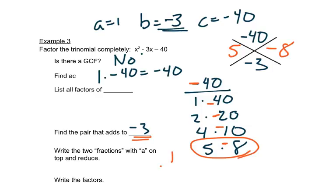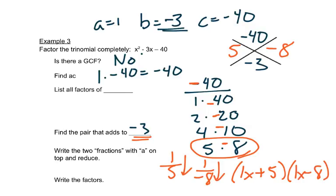So I write my fractions, 1 over 5 and 1 over 8. Neither can be reduced. So I'd have 1x plus 5 reading straight down, and 1x minus 8 reading straight down. And again we normally don't write those ones in there. We usually just write x plus 5 and x minus 8.